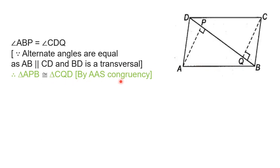We have two angles and a side for congruency of the triangle. But remember, this side is not the included side between these two angles. As this is the 90-degree angle, this angle B and side AB is not between these two angles — the angles are not on side AB. So we cannot write ASA congruence rule; here we have to write AAS congruence rule. By AAS congruence rule, triangle APB is congruent to triangle CQD.